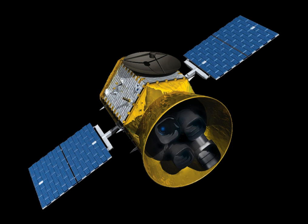The instrumentation consisted principally of a guard scintillation detector, an upper and a lower spark chamber, and a charged particle telescope. SAS-2 was launched from the San Marco platform off the coast of Kenya, Africa, into a nearly equatorial orbit.